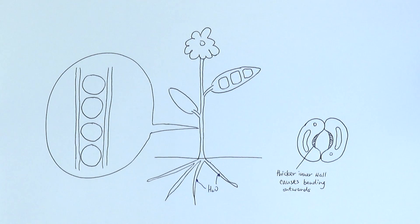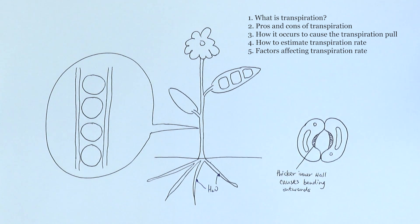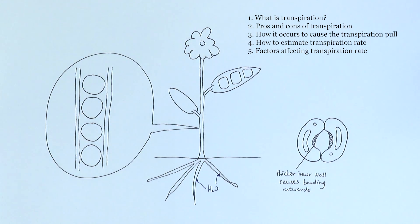In this video we'll be looking at transpiration. We'll talk about what transpiration is, what's good and what's bad about it, how it actually works and how it enables water to be transported across the plant. Later on we'll also talk about how we can estimate the rate of transpiration and what factors will affect it.